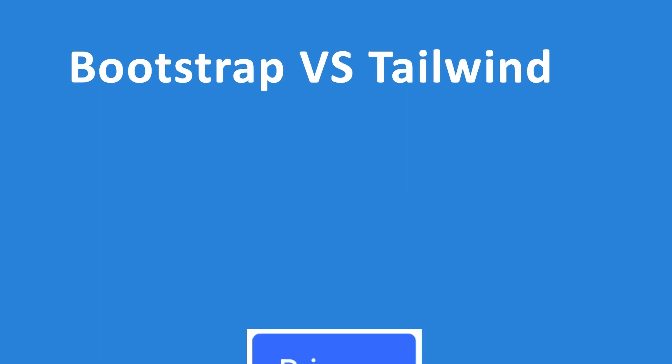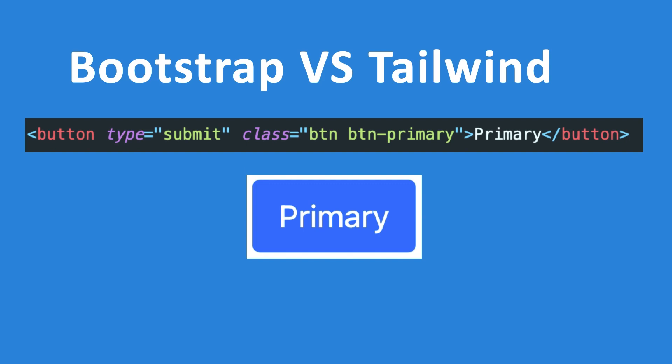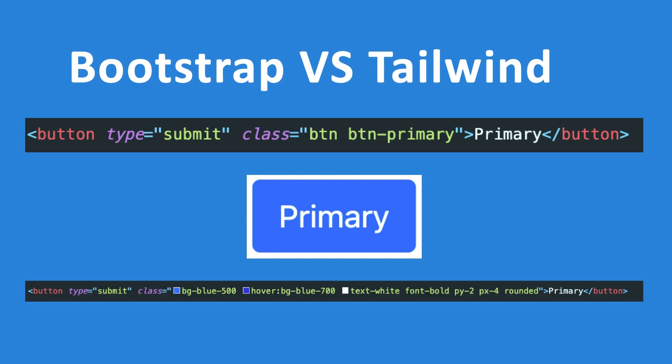Let me show you an example in code. Let's say you want to create a primary button inside your application. In Bootstrap, you create something like this — a button with a class of btn and another class called btn-primary. If we create the same button in Tailwind, you can see that the class name is a bit longer: you have a background color of 500, a hover statement, text-white, font-bold, padding y of 2, padding x of 4, and a rounded border. Bootstrap looks simpler, but the btn class is predefined. You don't want to use the same exact button for every scenario — what if you want to make your button different? That's why I prefer Tailwind over Bootstrap.